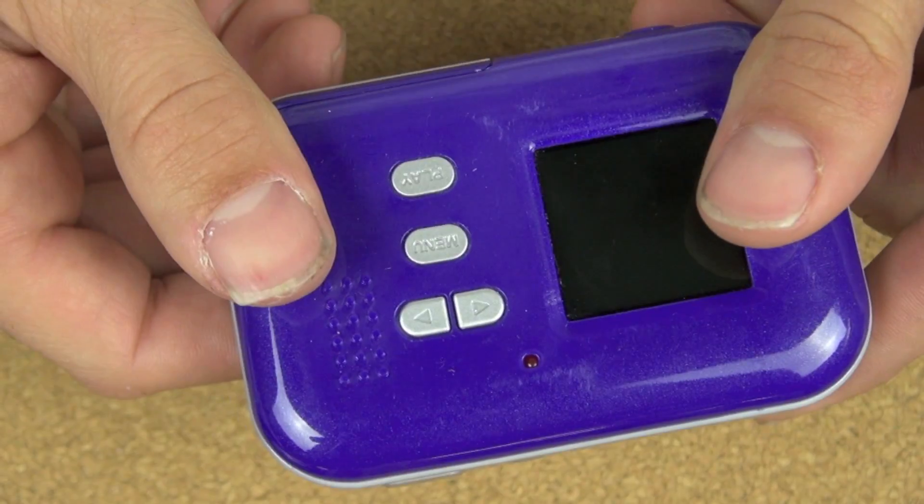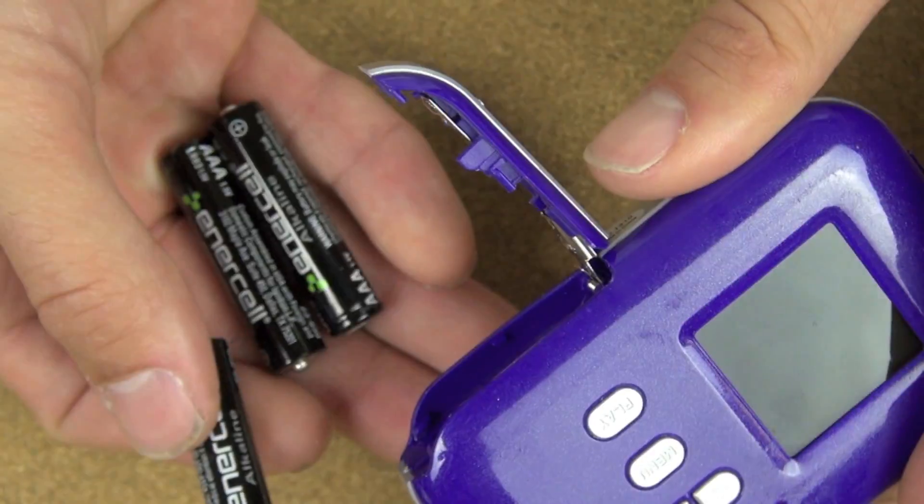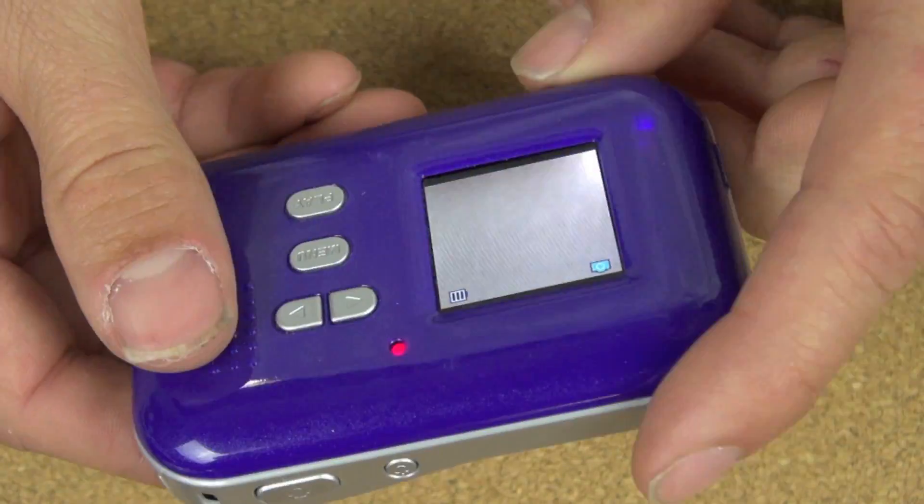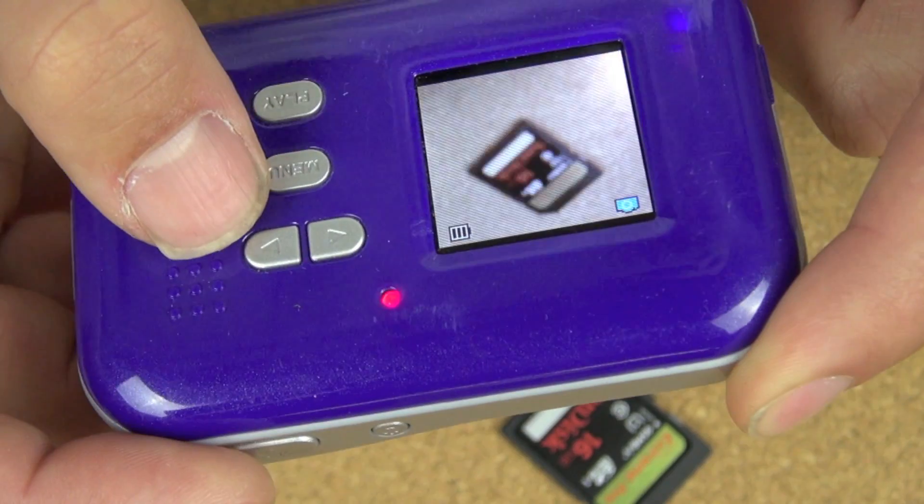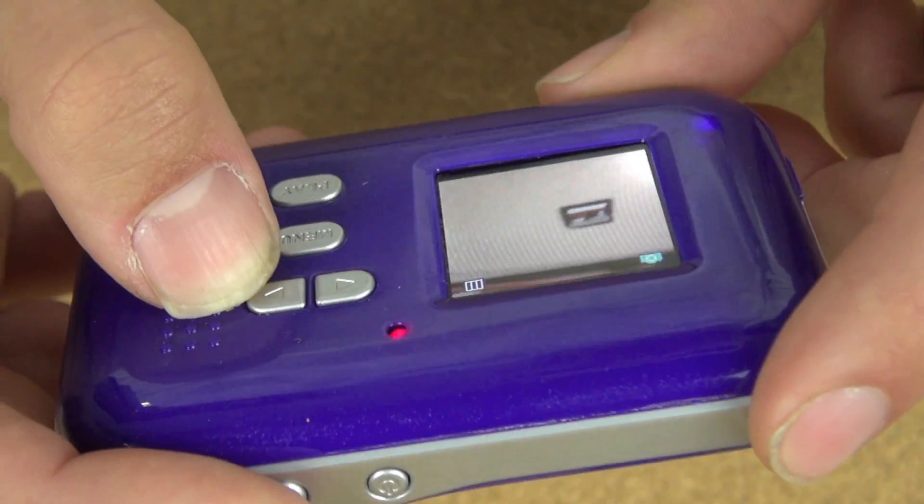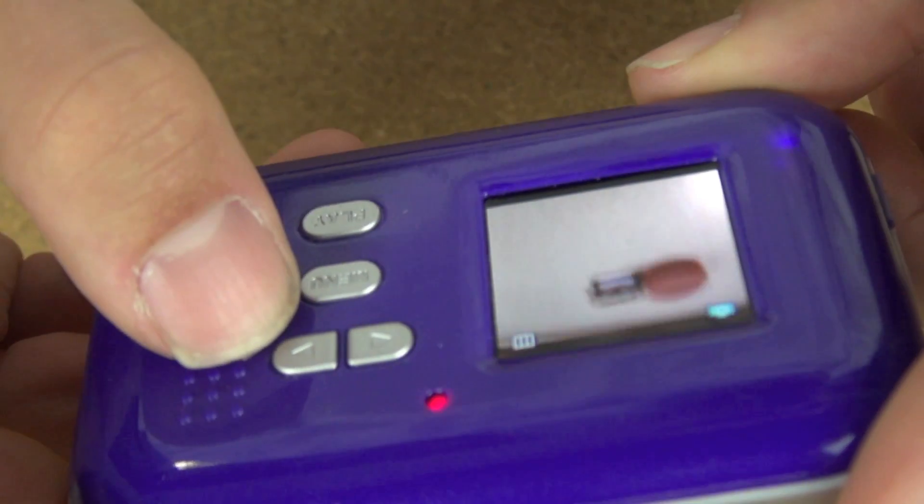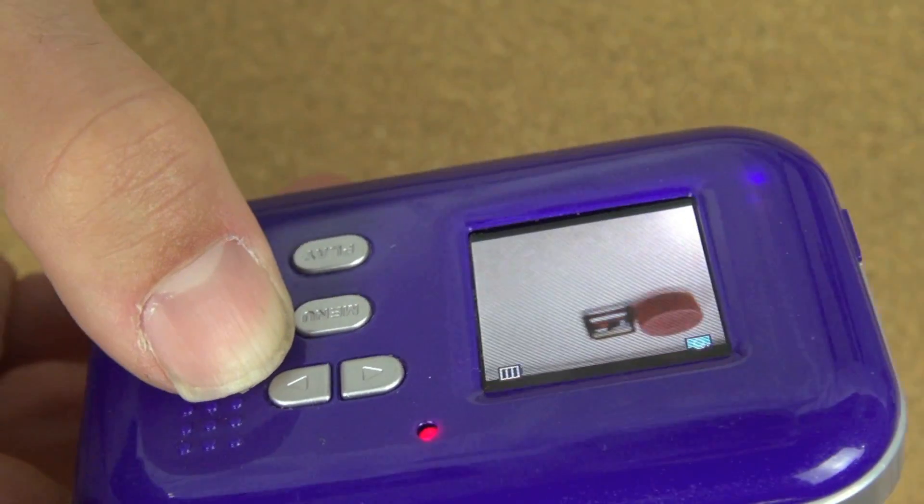Okay, so here's our Vivitar Vivicam camera, and we're going to take it apart and show you how it works. We've got the batteries here, and there's the on switch. Now that we have the camera on, we're going to take a few photos, and you can see the LCD display is showing what's going on there and letting us see the pictures.